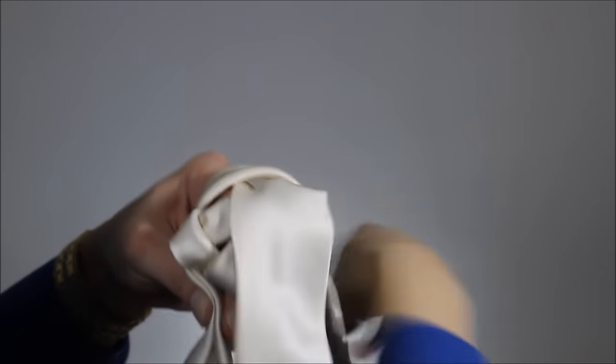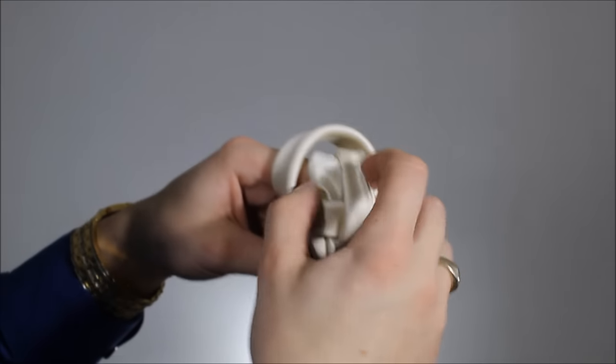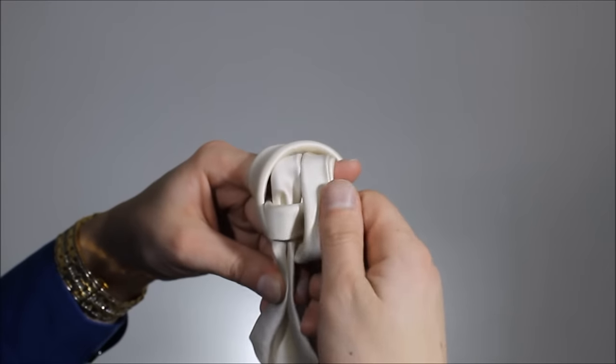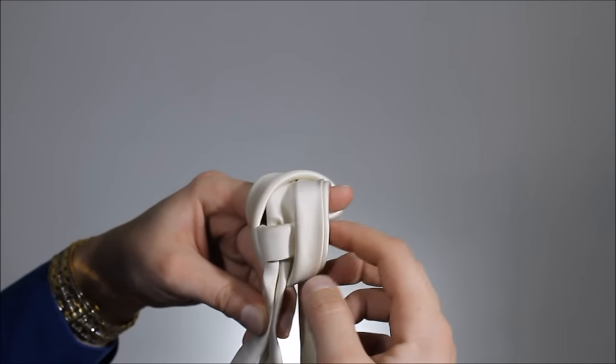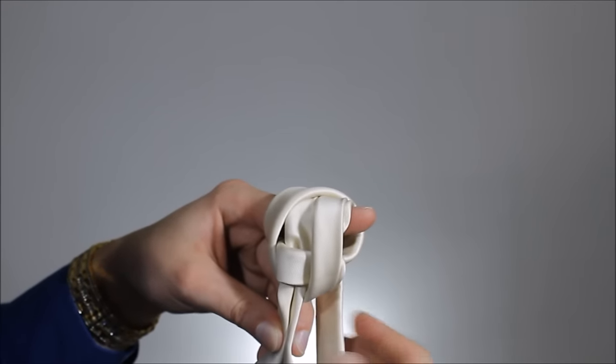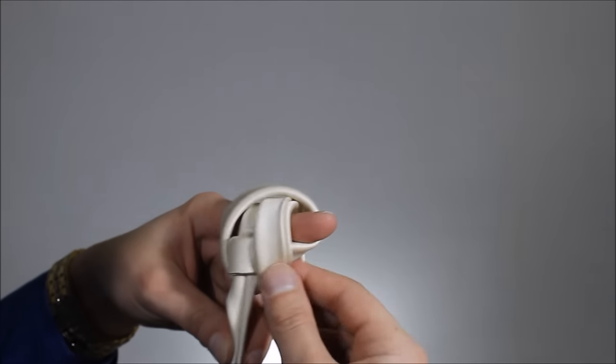Take it all the way through. You can tighten that up a little bit, but you don't want it to be tight because I still need to feed the tie through at the very end. So that crosses the back.